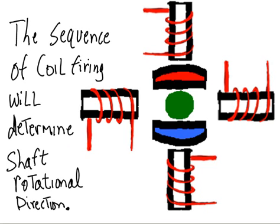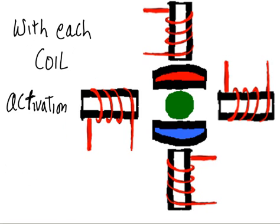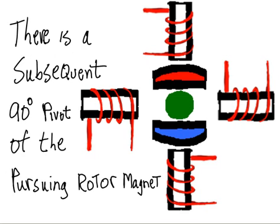The sequence of coil firing will determine shaft rotational direction. With each coil activation, there is a subsequent 90 degree pivot of the pursuing rotor magnet.